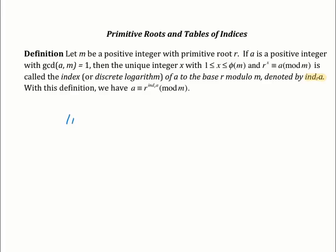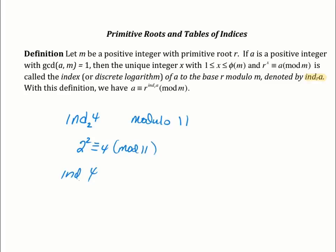So if I ask you, for example, for the index of 4, base 2 modulo 11, I'm saying what power do I have to raise 2 to to get 4? Index is an exponent — it's the exponent that you need to raise the root to to get the value. We know that 2 squared is congruent to 4 mod 11, so the index of 4 with base 2 is 2. It's the power that you raise 2 to to get 4.